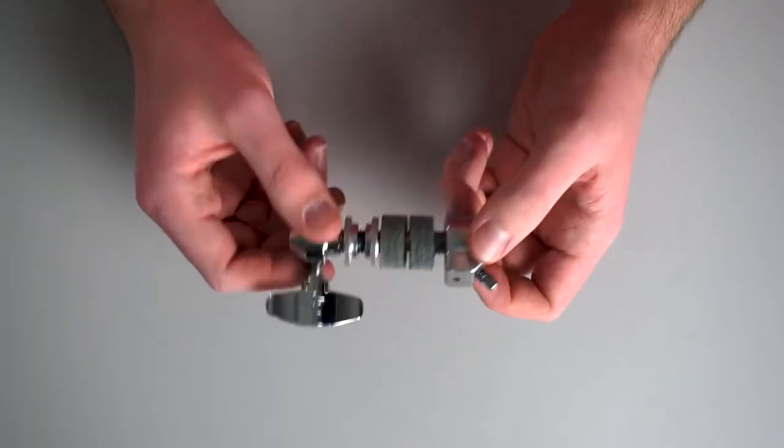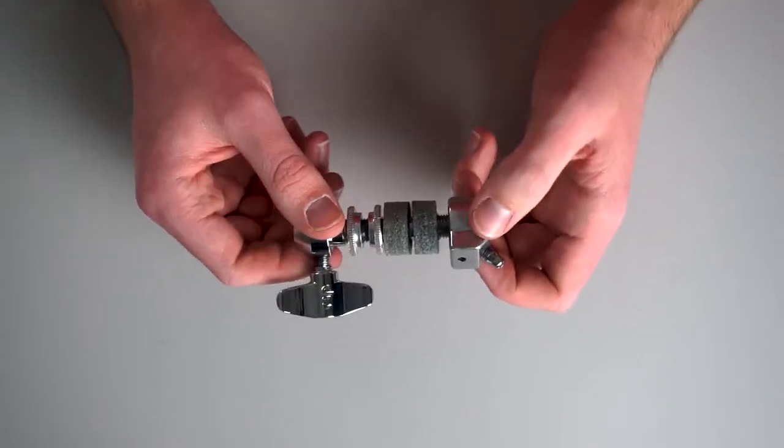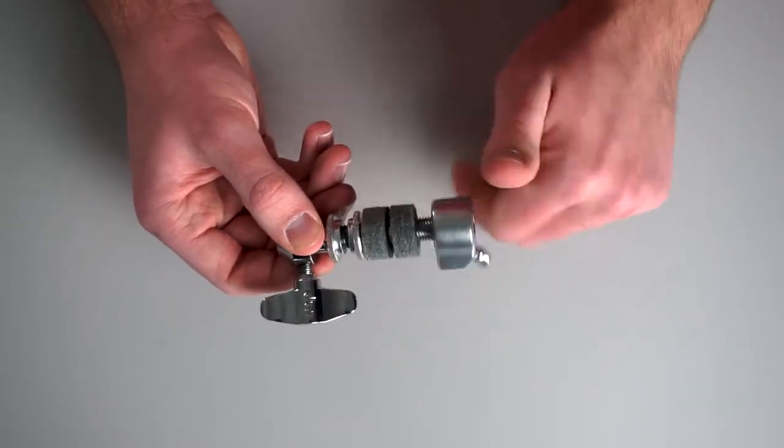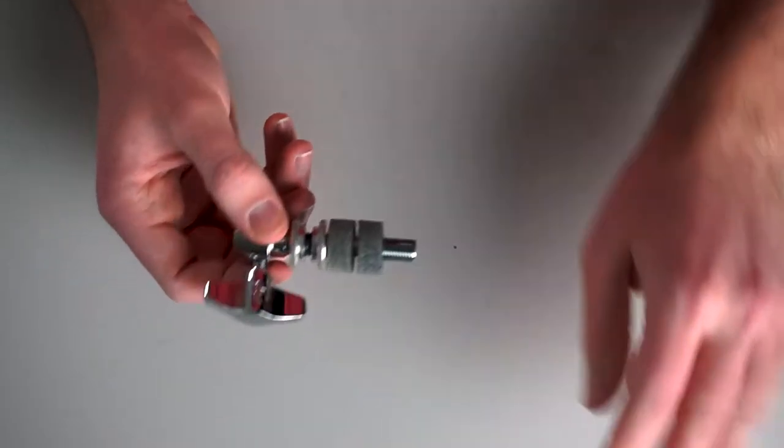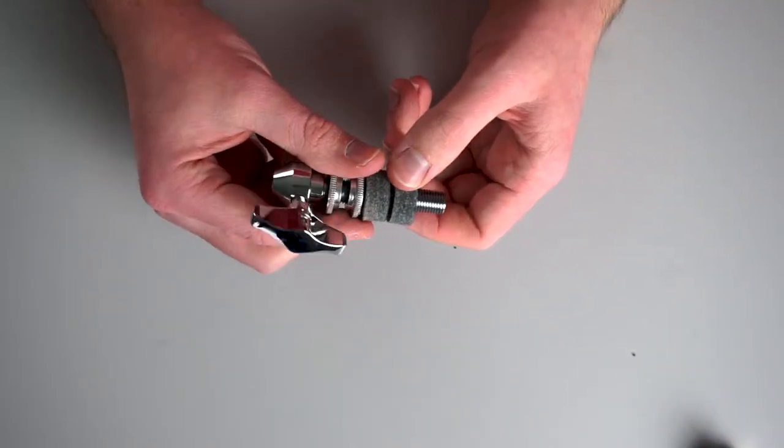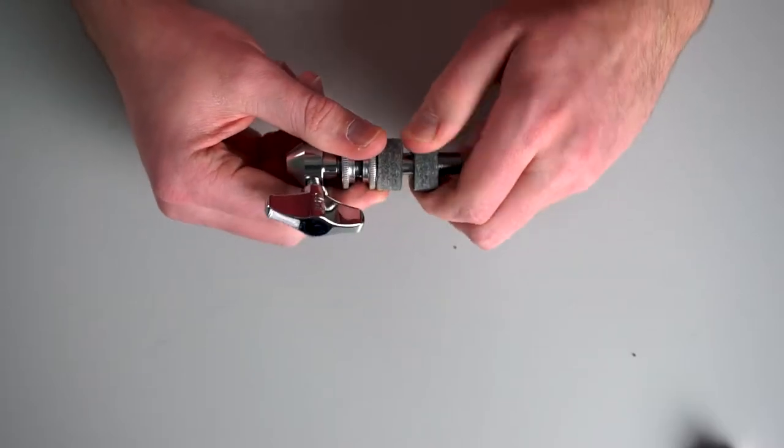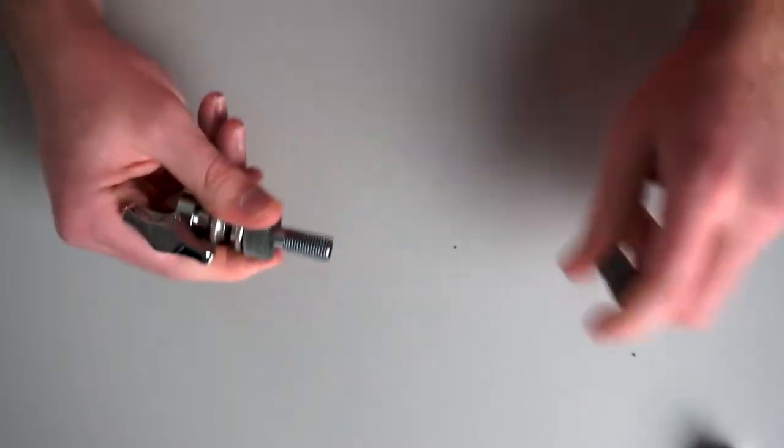So let's look at how to assemble a hi-hat clutch. Now to begin, we actually have to take it apart. I'll take off this bottom screw, and once you've done that, we'll set that aside, and then you're only going to take off the bottom piece of felt. Everything else can actually stay on your hi-hat clutch.